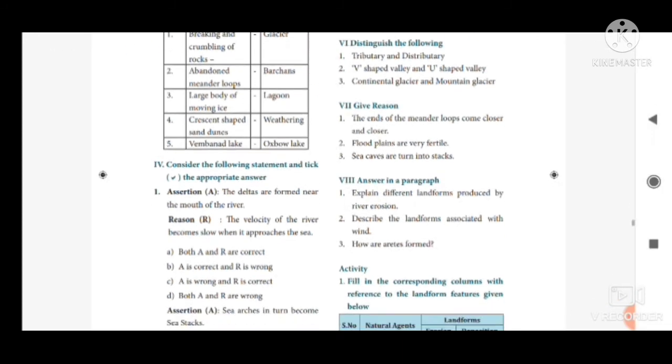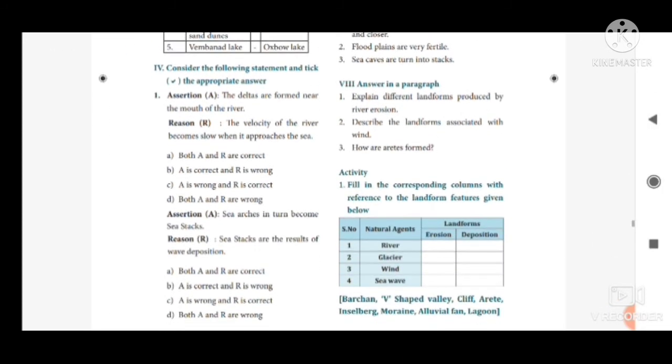The next, consider the following statement and tick the appropriate answer. First question, assertion: the deltas are formed near the mouth of the river. Reason: the velocity of the river becomes slow when it approaches the sea. Option A, both A and R are correct.